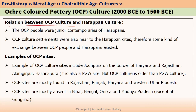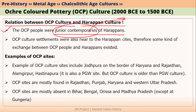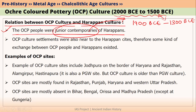What is the relation between OCP culture people and Harappan culture people? OCP people were actually the junior contemporaries of Harappans, which means their timeline matched with the Late Harappan culture — from 1900 BCE to 1300 BCE. Since both these timelines are more or less matching, we can call OCP culture people the junior contemporaries of Harappans.